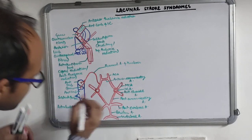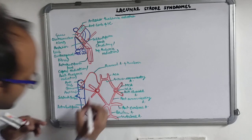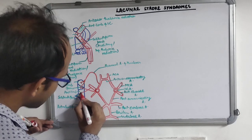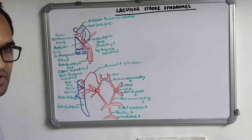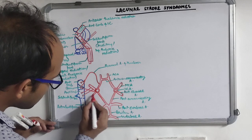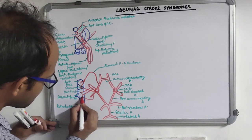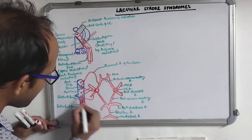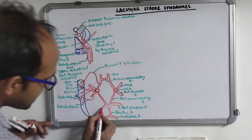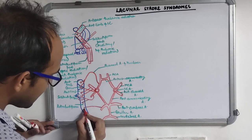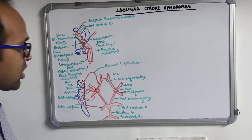The genu also receives a branch directly from the internal carotid artery. The middle cerebral artery gives off two branches - the medial striate branch and the lateral striate branch - each supplying the posterior limb of the internal capsule. The anterior choroidal artery gives off three branches, supplying each to the posterior limb, the sublentiform part, and the retrolentiform part. The posterior cerebral artery supplies the retrolentiform part and the sublentiform part.